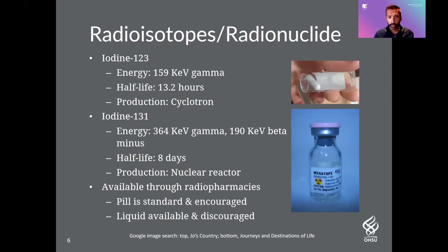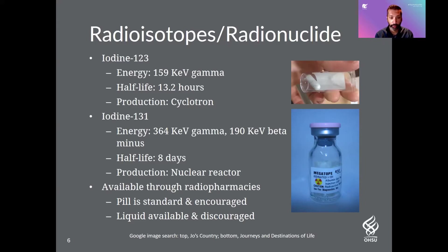A little more detail about the two main isotopes we primarily use in medicine: I-123 and I-131. Iodine-123 has a 13-hour half-life, whereas iodine-131 has a very long half-life of eight days, which is very useful for therapy. They're produced in different ways — I-123 is made in a cyclotron, whereas I-131 is made in a nuclear reactor. For us and every other nuclear medicine facility around the country, we have them readily available from commercial radio pharmacies.